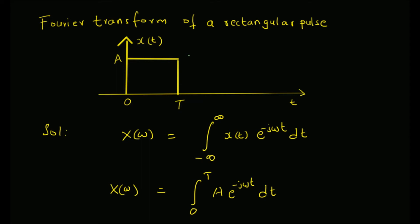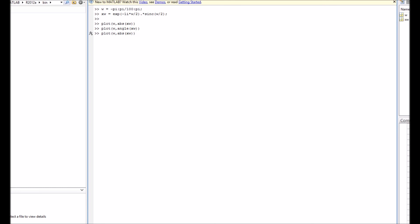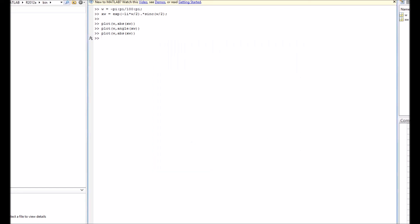To summarize, we looked at the Fourier transform of a rectangular pulse. The rectangular pulse is defined as value a for the interval 0 to T, and 0 otherwise. The Fourier transform is given by the definition integral from minus infinity to plus infinity of x(t) · e^(−jωt) dt, which evaluates to aT · e^(−jωT/2) · sinc(ωT/2). The magnitude follows a sinc function, and the phase spectrum depends on −ωT/2 and the sinc function. We looked at MATLAB plots for both the magnitude spectrum and the phase spectrum.